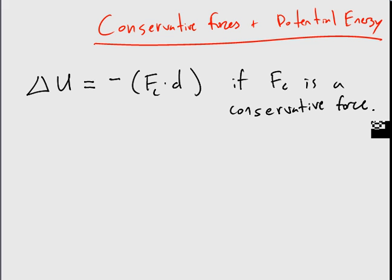So let's now think about what this means. Force times distance, we know, is work. And so what we're really saying here is that the change in potential energy is the negative of the work done by a conservative force. Now we have to actually figure out what conservative forces and potential energy are.